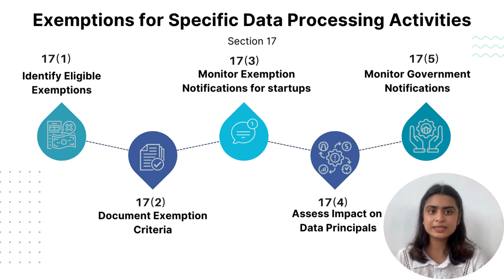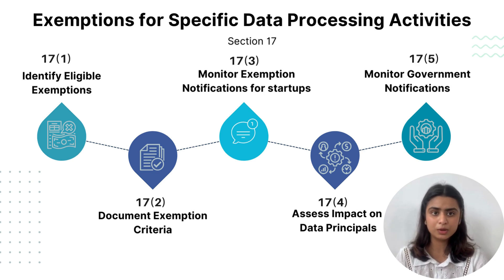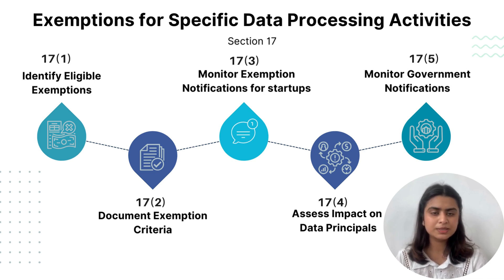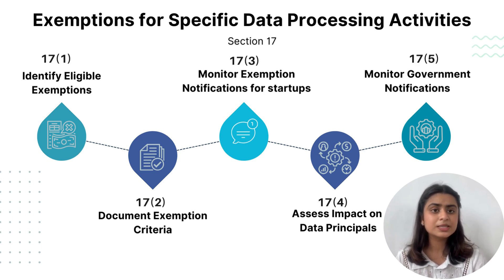Second, document exemption criteria. For processing under the interest of sovereignty, security, or public order, we need to meticulously document the reasons and justifications for claiming such exemptions, maintaining transparency and accountability. For example, Delhi Police and Mumbai Police document their data processing activities related to public safety and national security, ensuring they meet the criteria under this clause and maintain transparency in their operations.